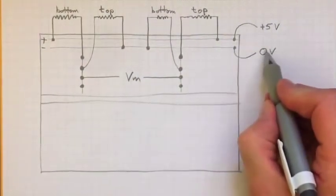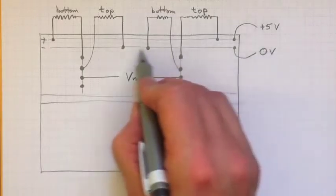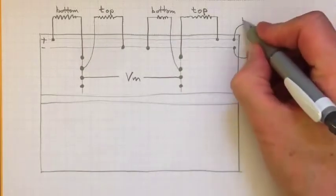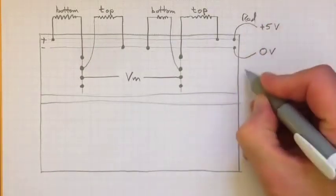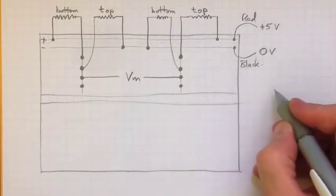Likewise, I'd take the zero volt line from the Arduino, the ground line, and connect it to the ground bus all along the edge of the breadboard. I'd use a red wire for the positive and a black wire for ground because it makes it easier to keep track of.